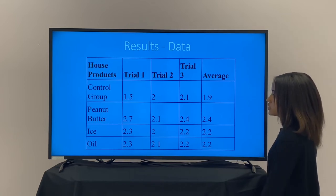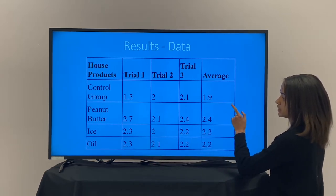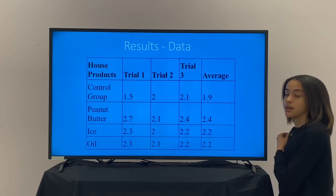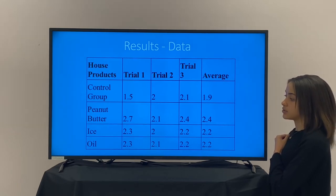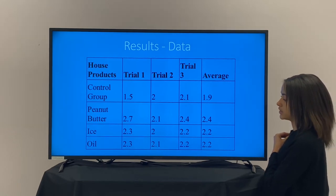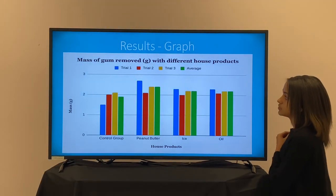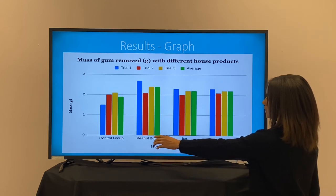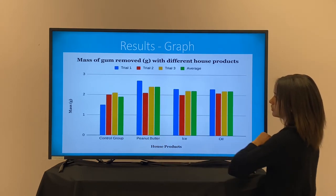In my data table it shows that I used three trials for each group to get my average. My average for the control group was 1.9 grams, my average for peanut butter was 2.4 grams, and ice and oil both had an average of 2.2 grams removed. When put into a graph, it shows in green the average of each group and that peanut butter averaged the most.